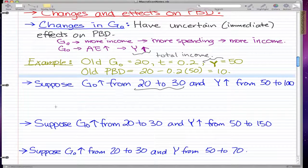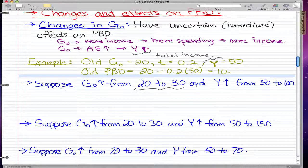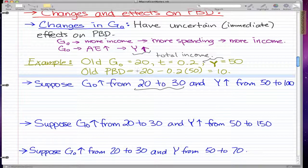We have initialized the old government spending as 20, the tax rate as 20%, and the total income as 50. Substituting these values into our primary budget deficit formula, we get 10.